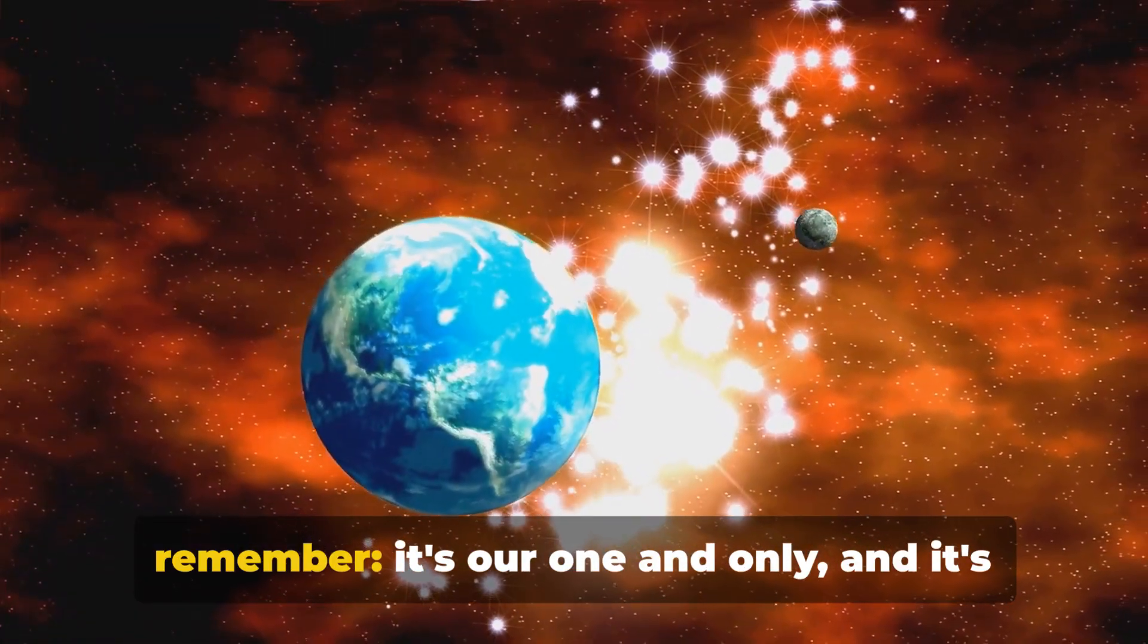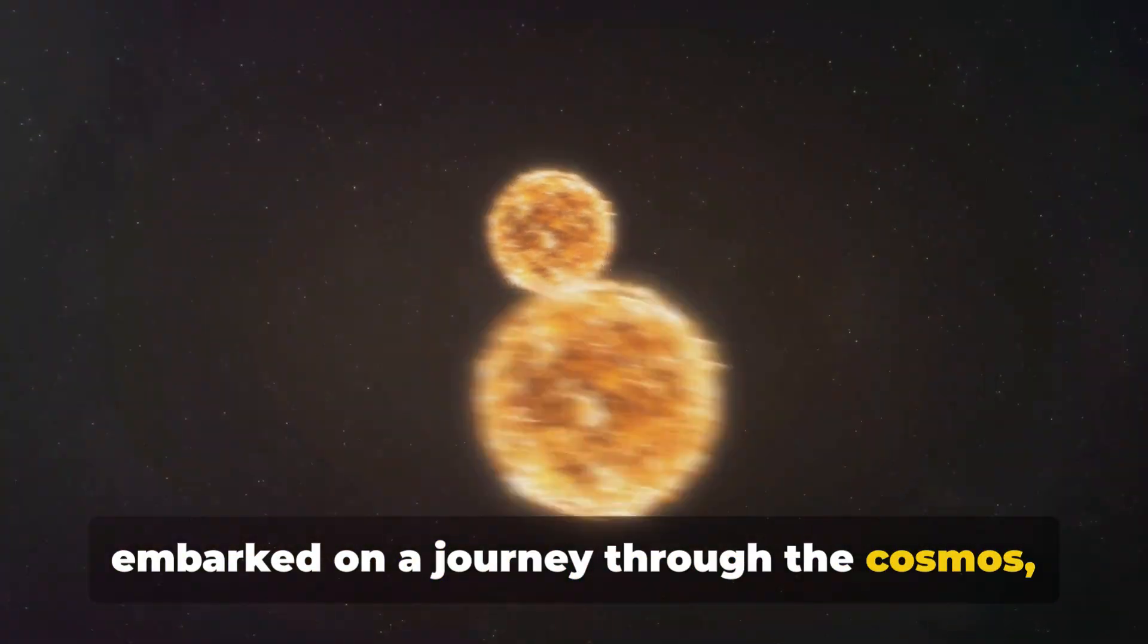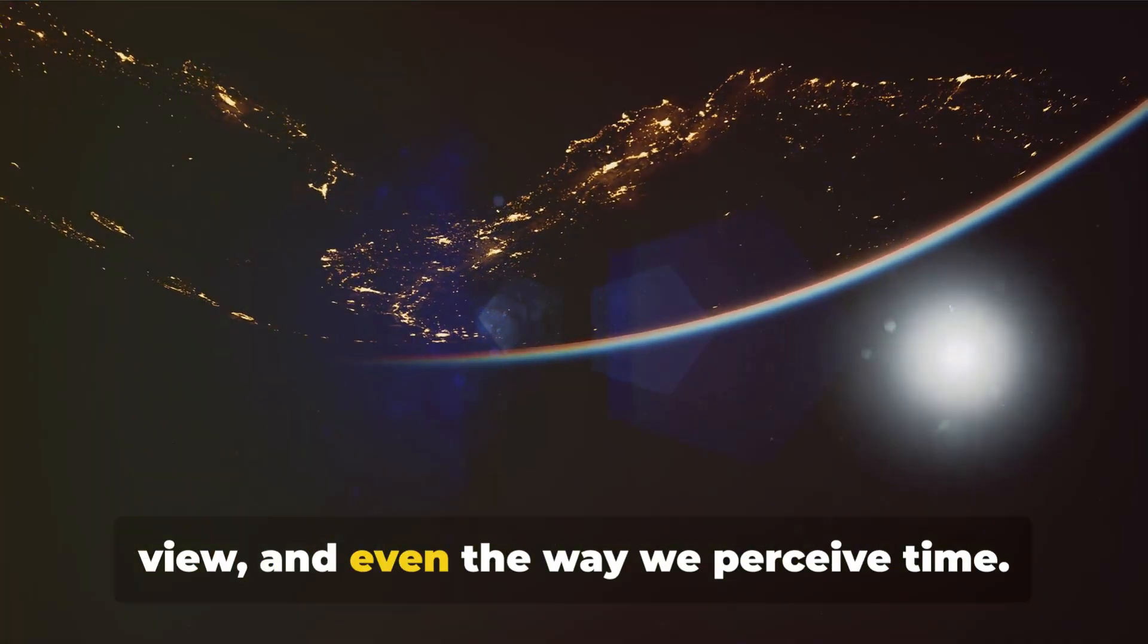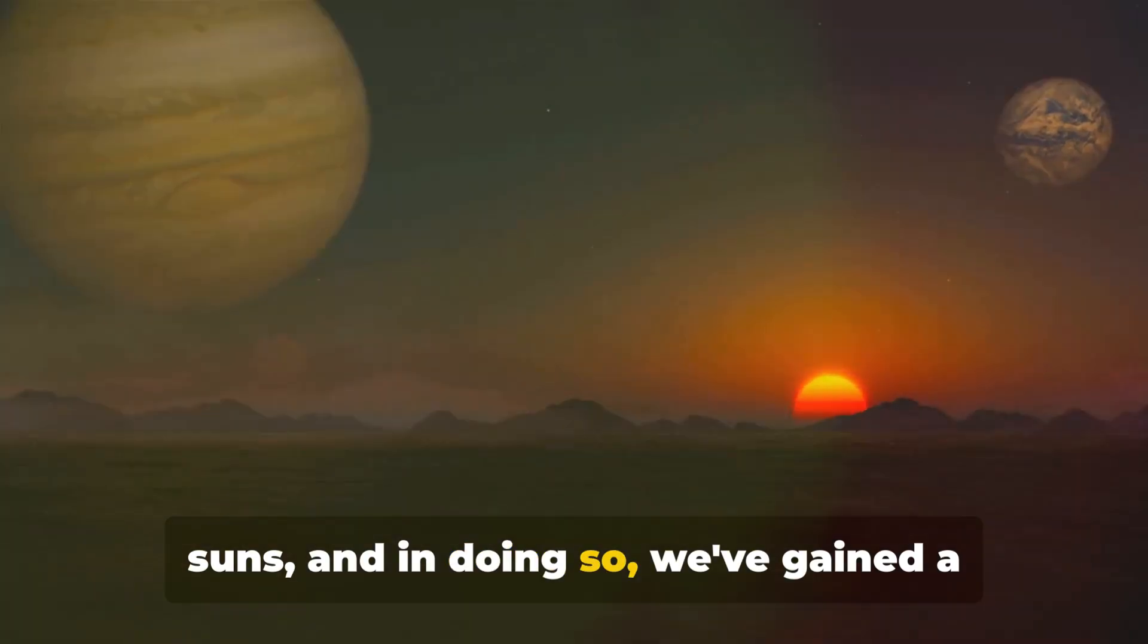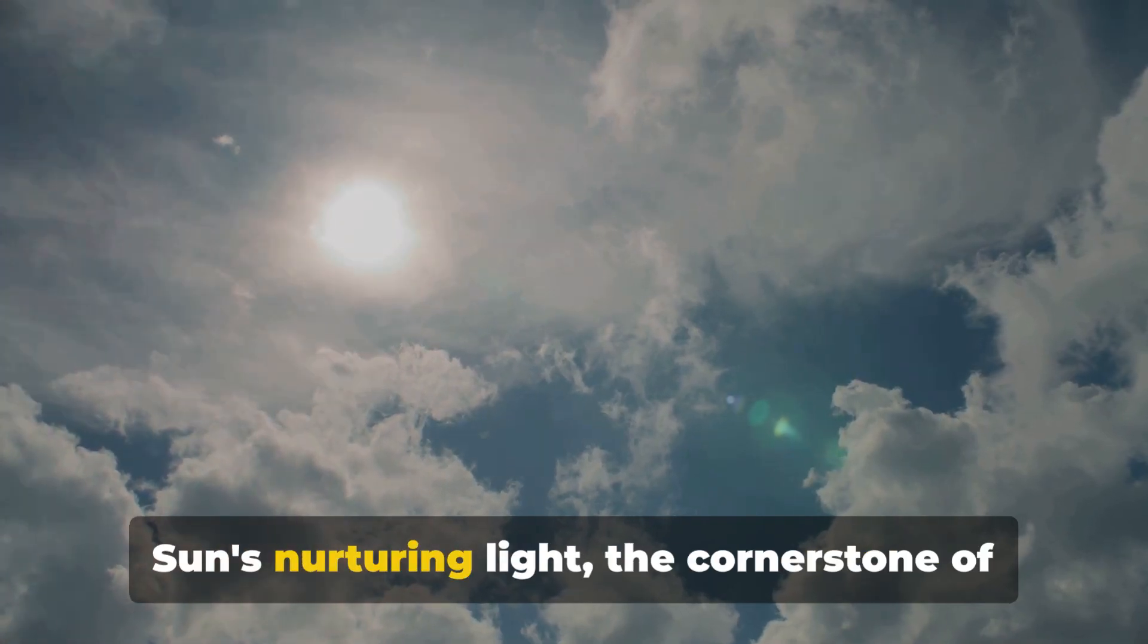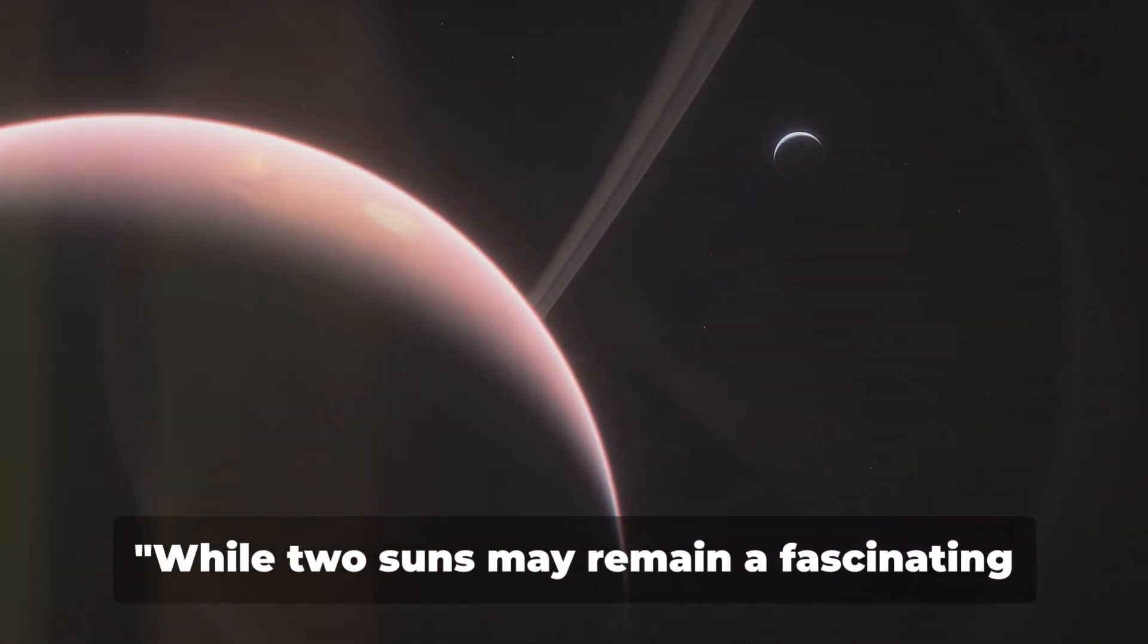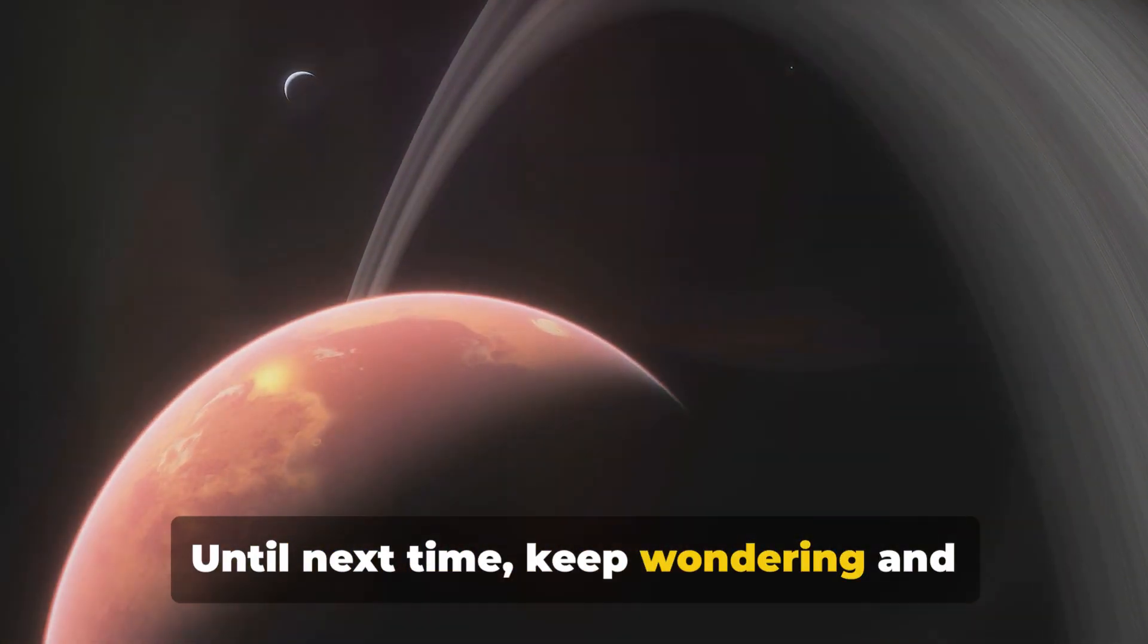Next time you look up at the sun, remember, it's our one and only, and it's what makes life on earth possible. So, what have we learned today? We've embarked on a journey through the cosmos, exploring the intriguing concept of a binary star system. We've delved into the potential impacts of such a system on our very own earth, examining changes in our climate, our sky view, and even the way we perceive time. We've confronted the challenges we might face in surviving under the glow of two suns, and in doing so, we've gained a deeper respect for the delicate balance of our current solar system. We've realized the beauty in our single sun's nurturing light, the cornerstone of life as we know it. In contemplating the fantastic scenario of a binary star system, we've come to appreciate the unique nature of our own cosmic neighborhood. While two suns may remain a fascinating concept, we should continue to appreciate and preserve our unique solar system. Until next time, keep wondering and exploring.